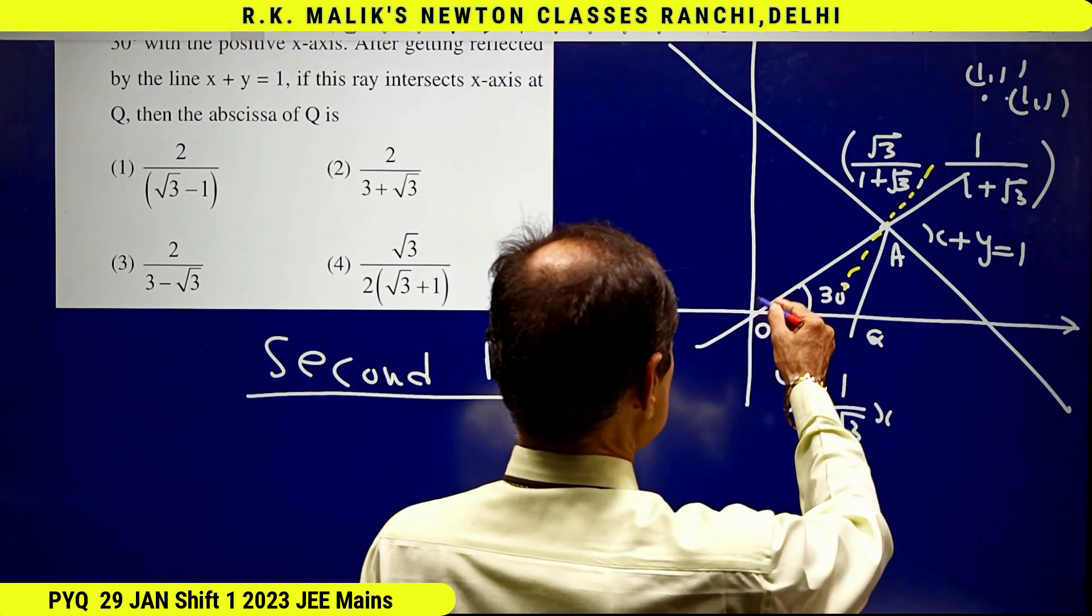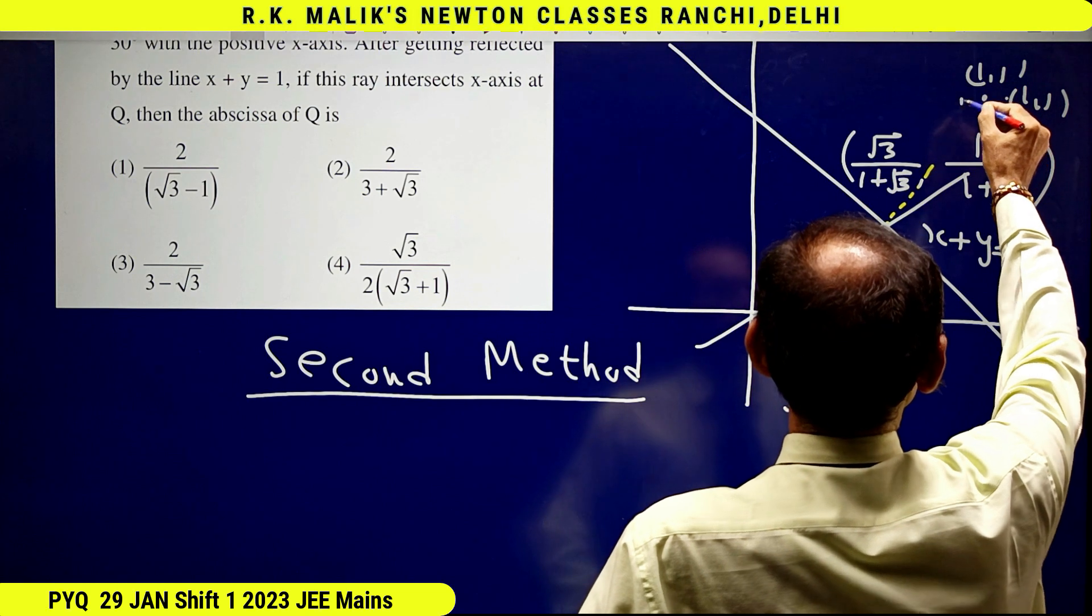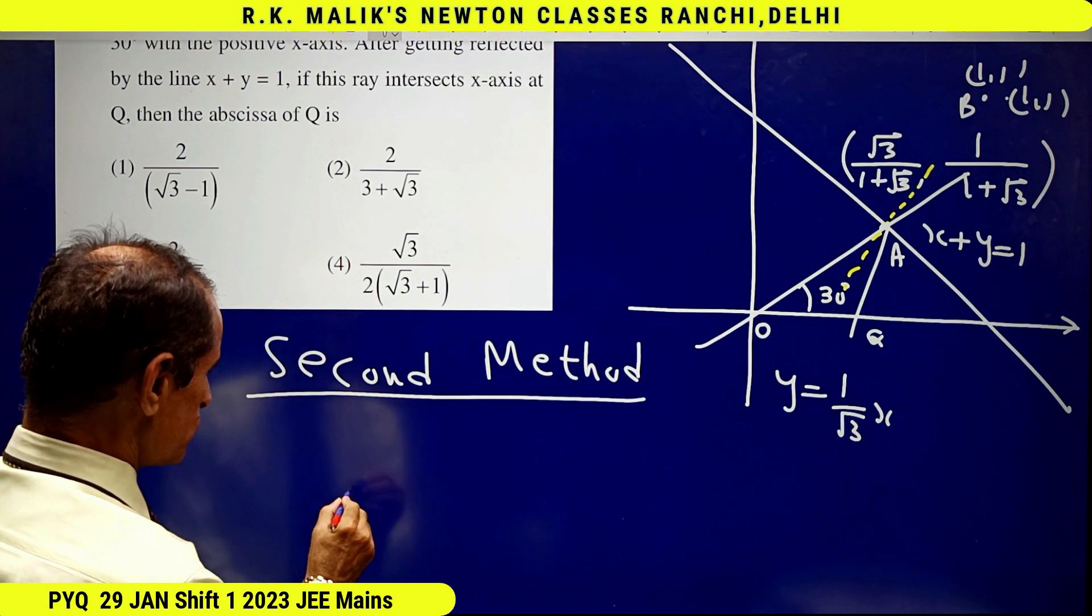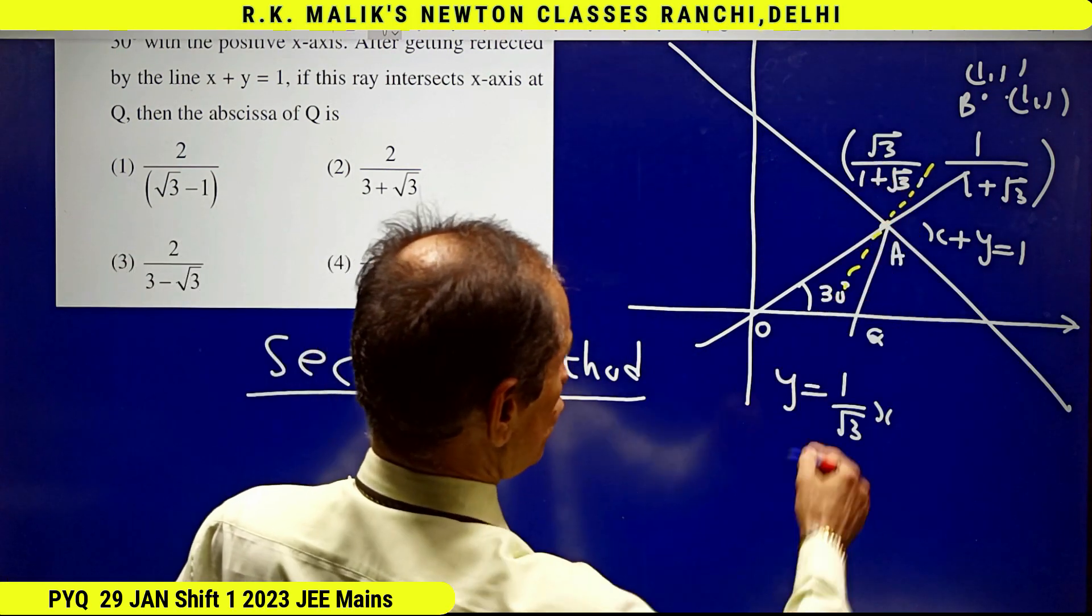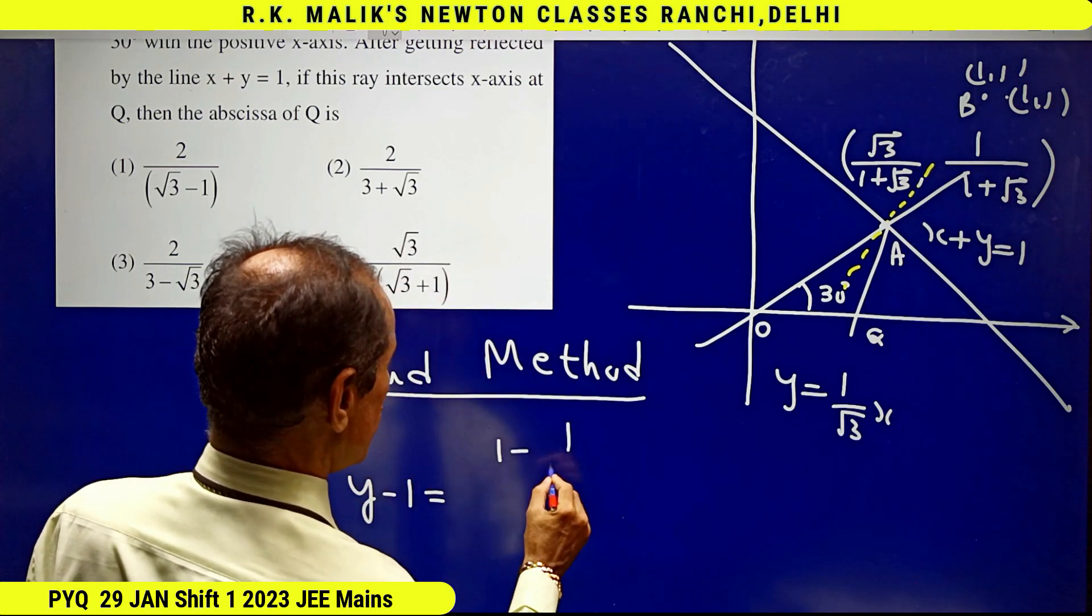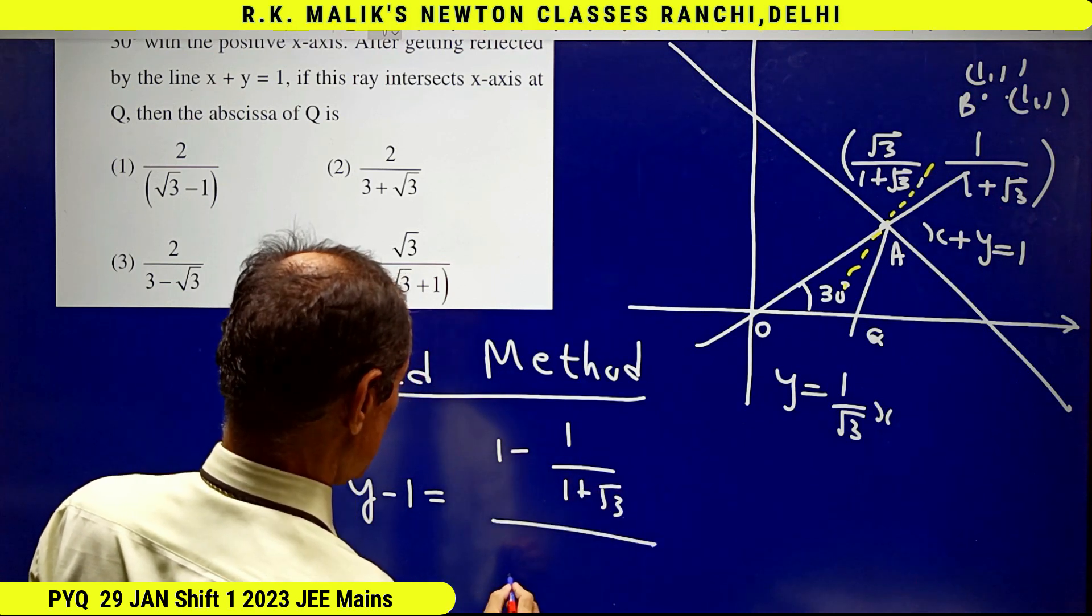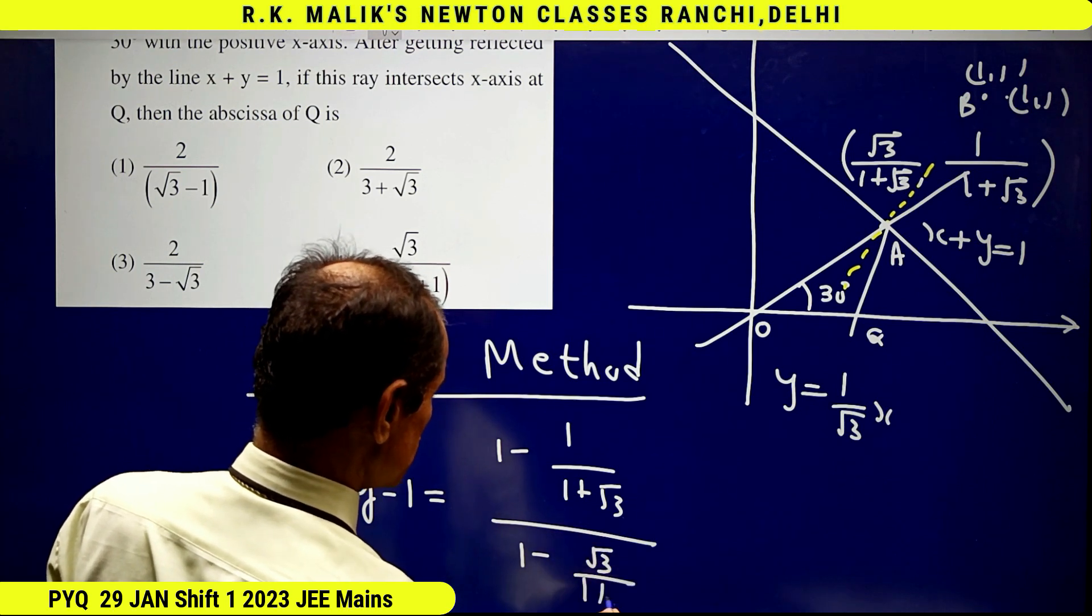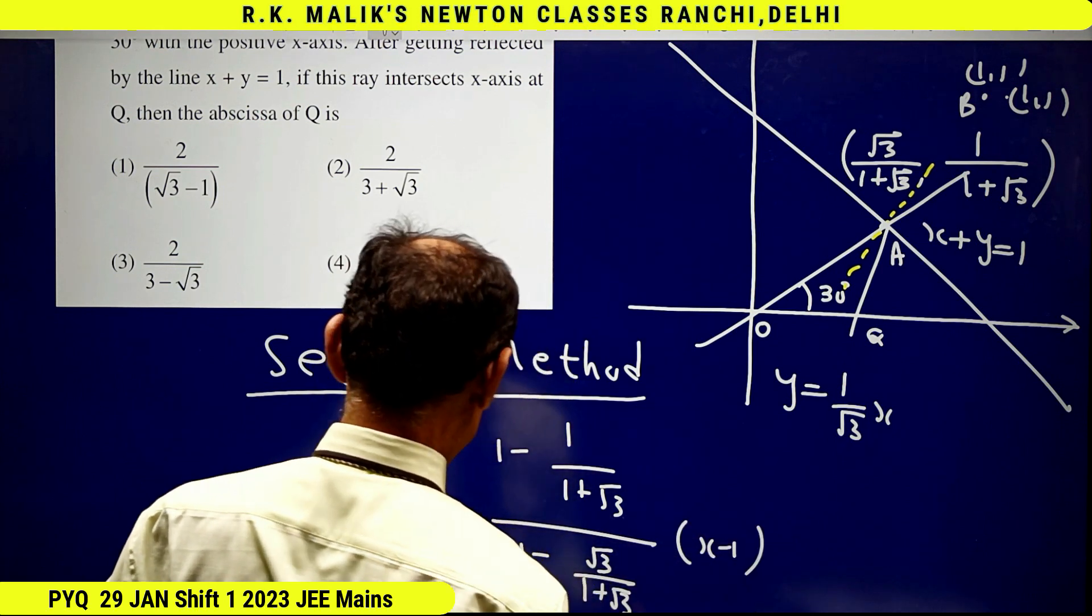The image point of O in this line is (1,1), which I name as B. Hence, the equation of AB becomes y - 1 equals the slope of AB—which is (1 - 1/(1+√3))/(1 - √3/(1+√3))—times (x - 1).